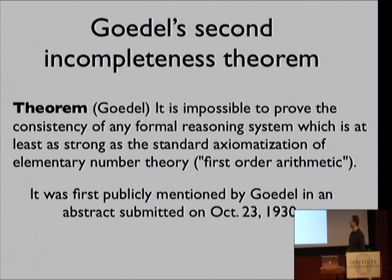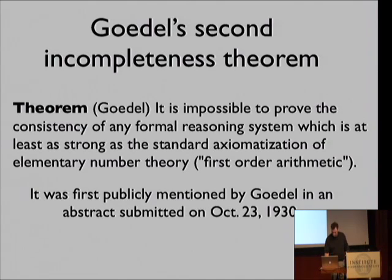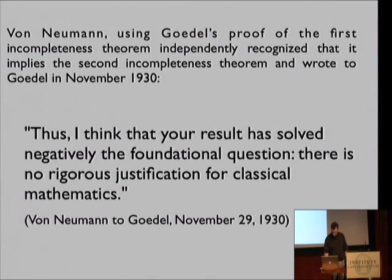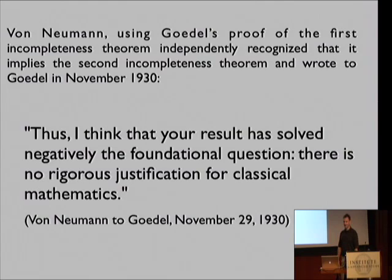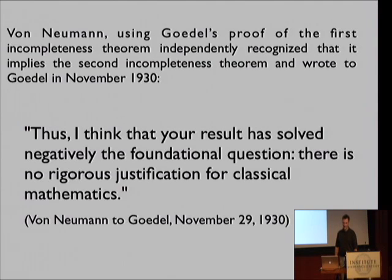Let me formulate his second incompleteness theorem in the following form, which might look a little too strong for some who know the original formulation, but I'm going to argue that that's how it really should be understood. The theorem says, in my understanding, that it can be proved that it's impossible to prove consistency of first-order arithmetic, elementary number theory, or of any other theory which is at least as strong. Von Neumann wrote to Gödel: 'Thus I think that your result has solved negatively the foundational question. There is no rigorous justification for classical mathematics.' That was November 29, 1930 — 80 years ago.